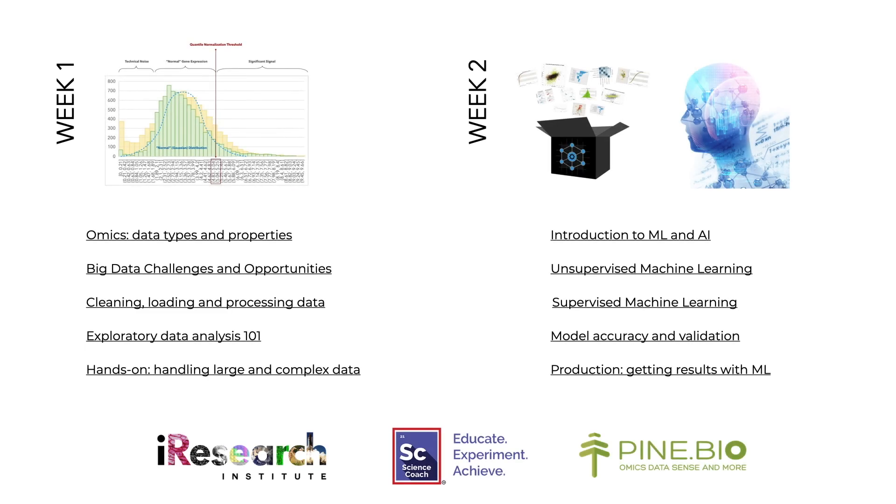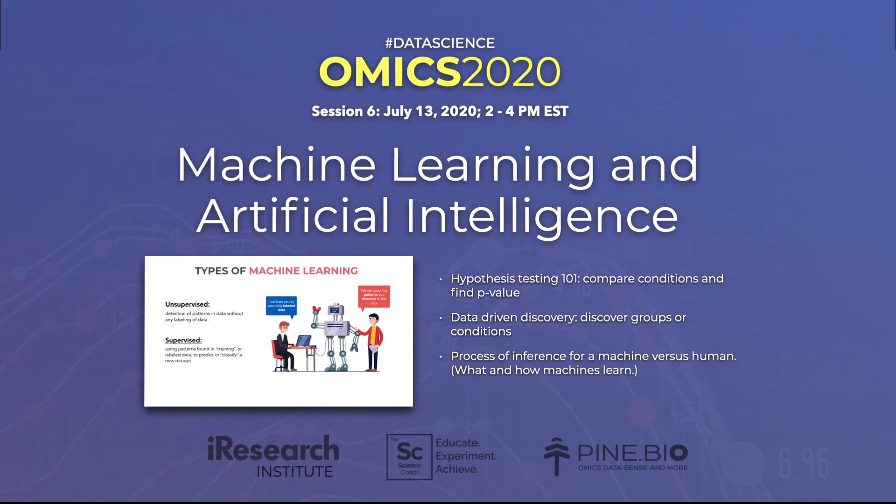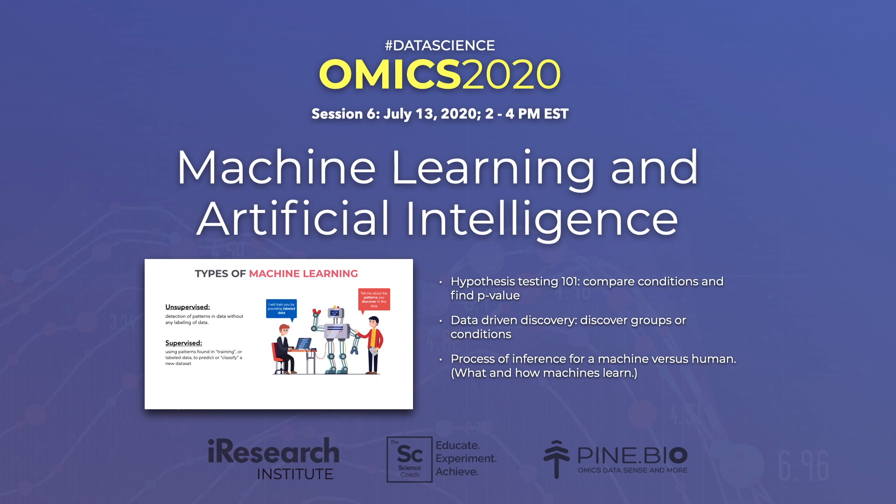These sessions will conclude week one of the program and you will be equipped to explore various types of omics data using data wrangling techniques that extract useful signals from big datasets. In week two of the program, we will focus on multivariate analysis methods and examples using machine learning and artificial intelligence. In session six, we will start our discussion of analysis methods that can be grouped into supervised and unsupervised methods.